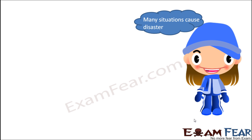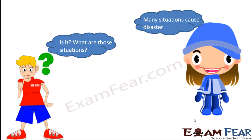It is not only flood or excess rainfall which can bring such situations. Many other situations can cause disaster. Sometimes you might be surprised — do we have such natural situations which can cause so much damage? Yes, of course. We will look at those extreme scenarios when the winds become so strong that they can cause damages and disasters, like thunderstorms, cyclones, and tornadoes.